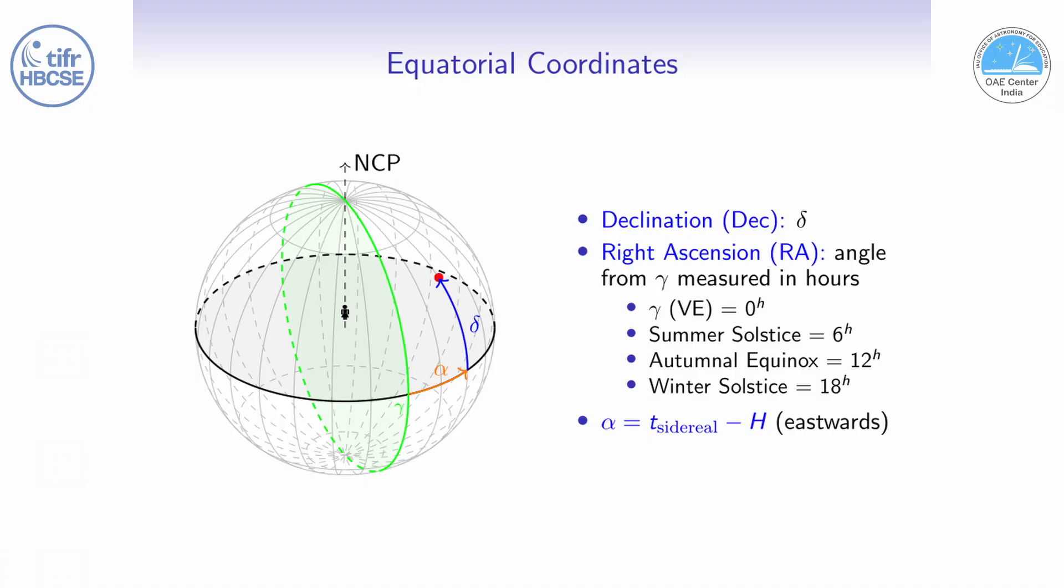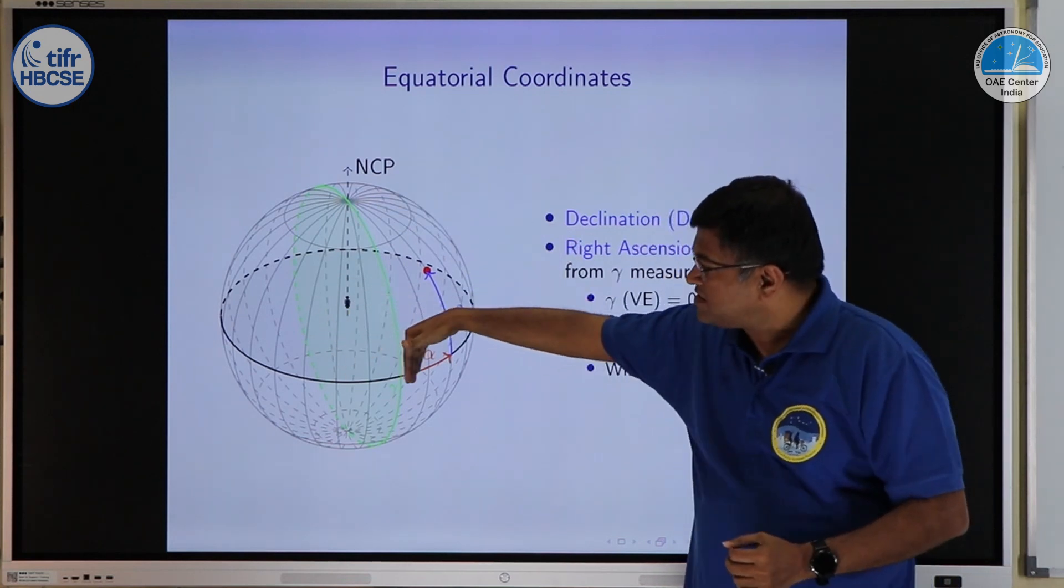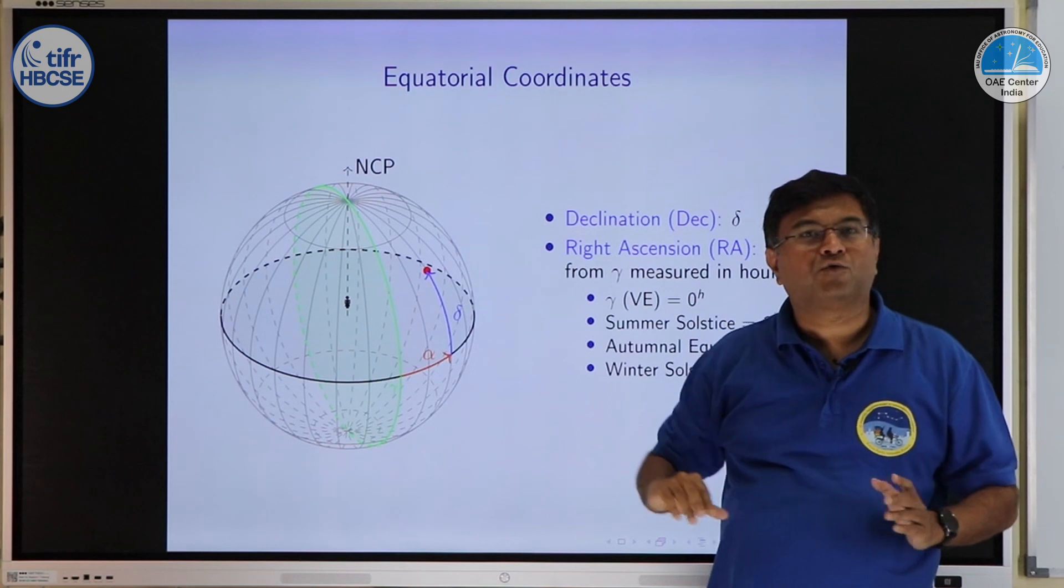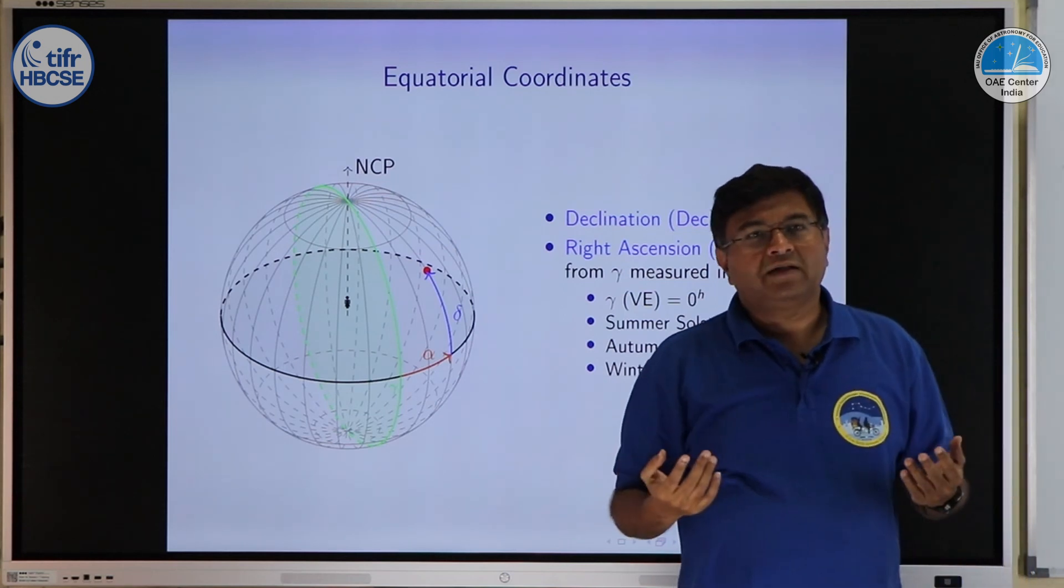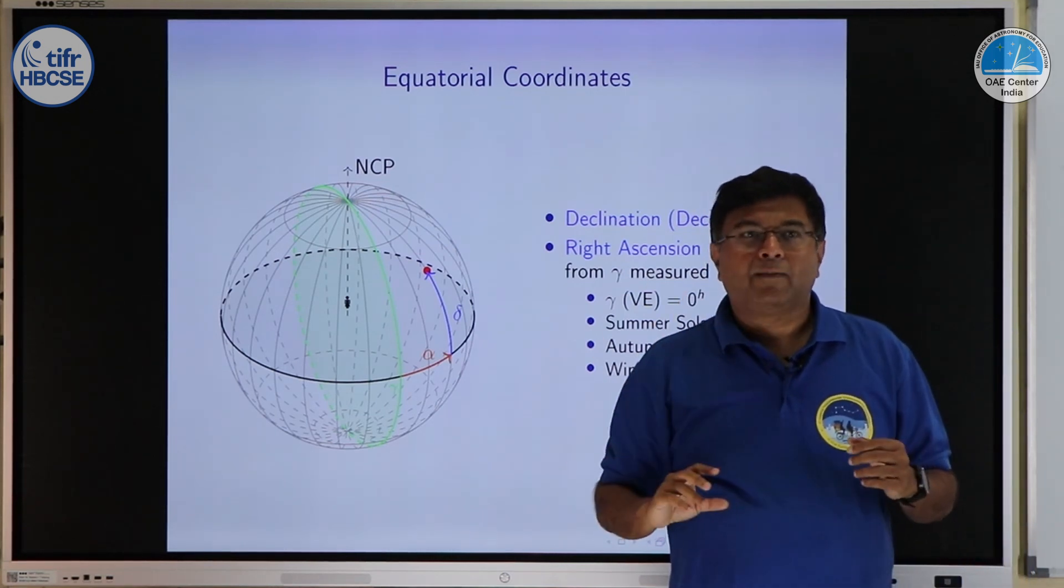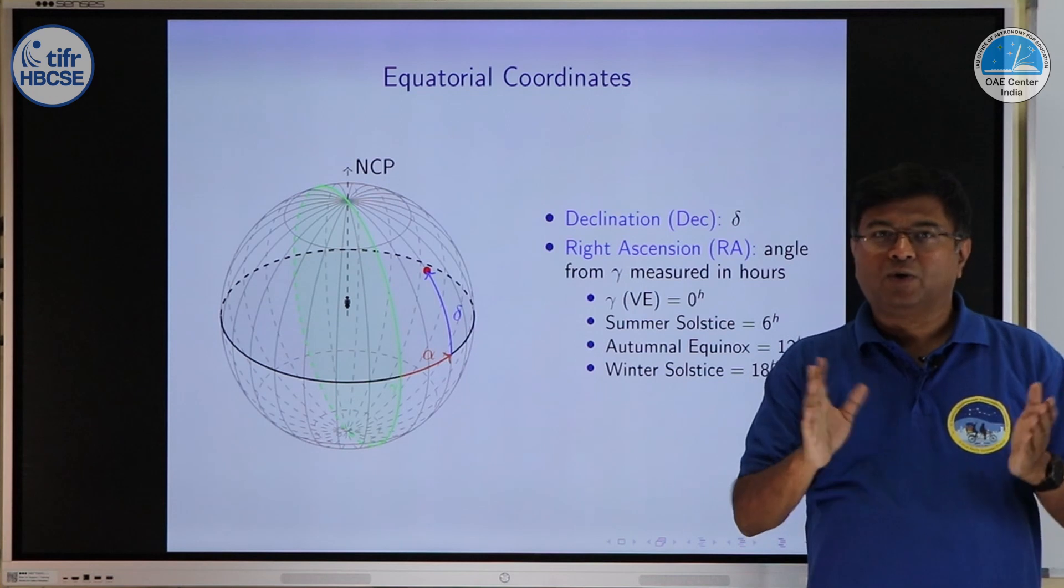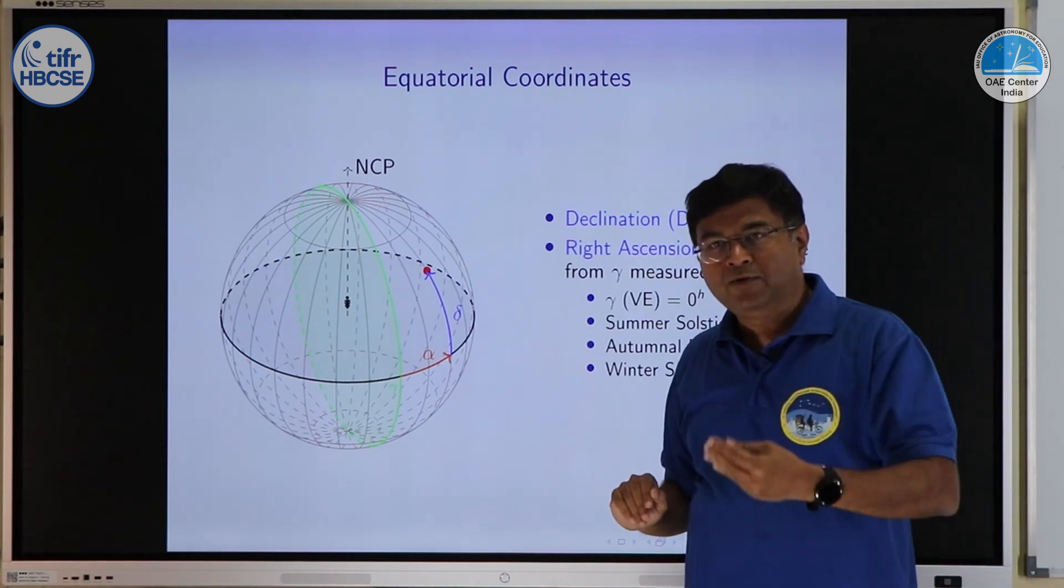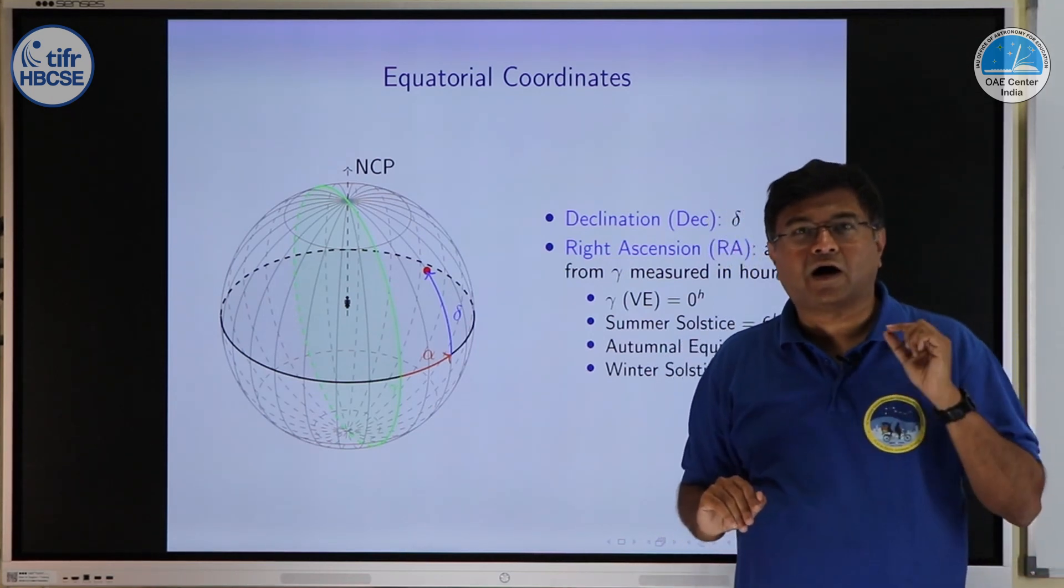Vernal equinox the right ascension will be 0 hour, summer solstice right ascension will be 6 hours, autumnal equinox 12 hours, winter solstice 18 hours and if you come all the way full circle it will go from 0 hour to 24 hours. Full circle is 24 hours which corresponds to 360 degrees. You already know that sky rotates by about 15 degrees in one hour. So, 15 degrees of sky is equivalent to 1 hour of RA. In every hour RA changes by 1 hour. Now, you have got a good idea why I am using hours instead of degrees.